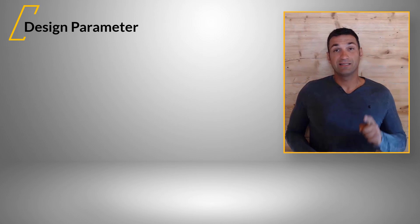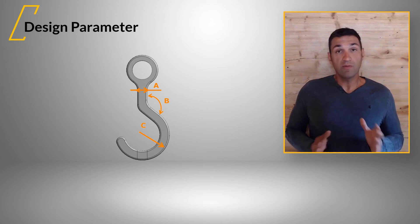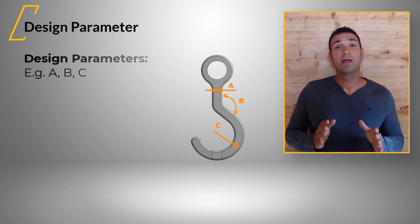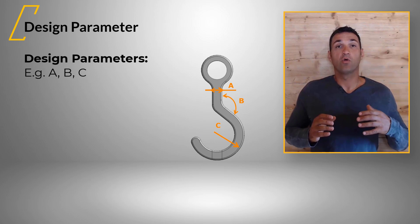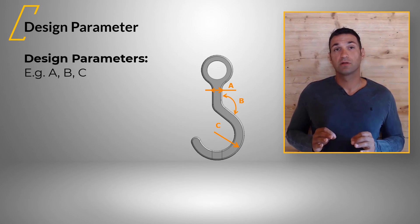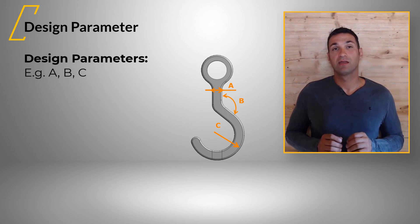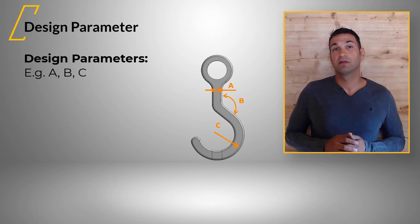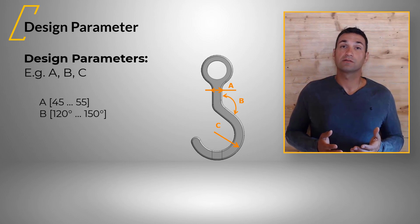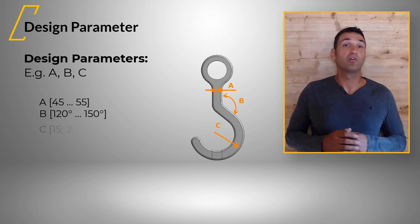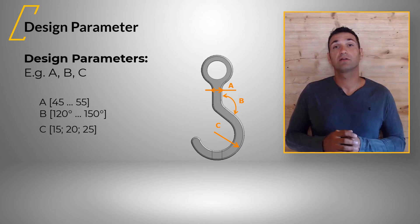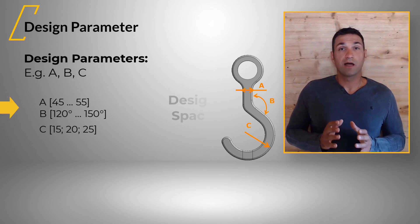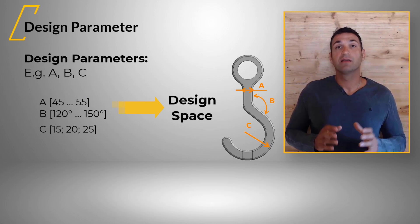The first term is design parameter. Remember our hook example from the parametric analysis and optimization course — we choose parameters that we wanted to change on purpose. These are the design parameters. The first step is defining the lower and upper bounds of your parameters. They can be continuous parameters with a lower and upper bound, discrete parameters which assume several discrete values, or even binary parameters. The parameter bounds of all parameters span the design space.